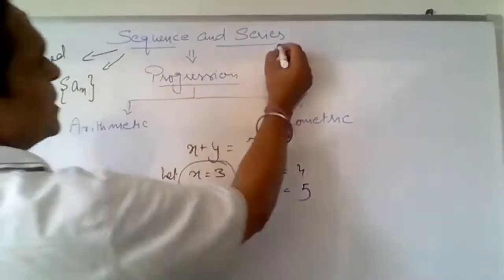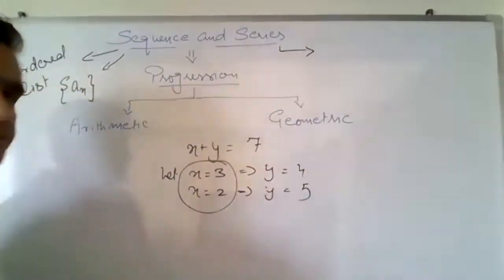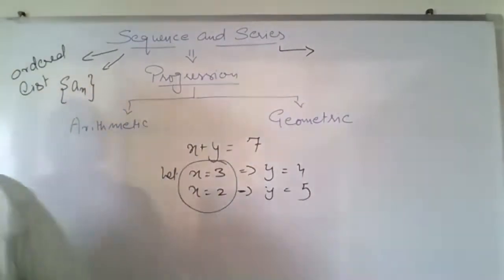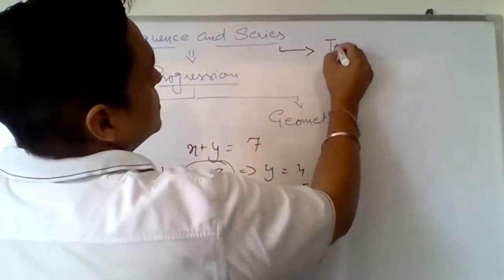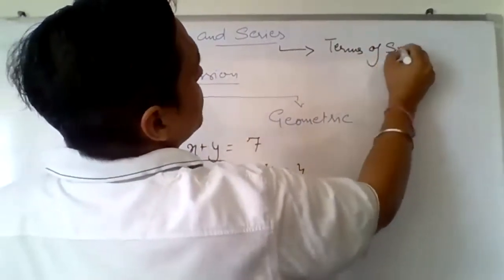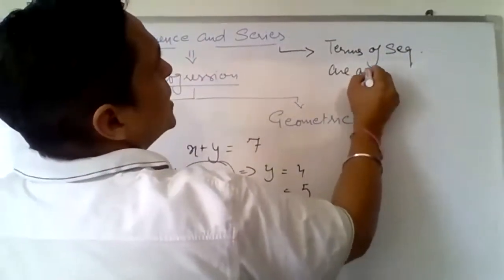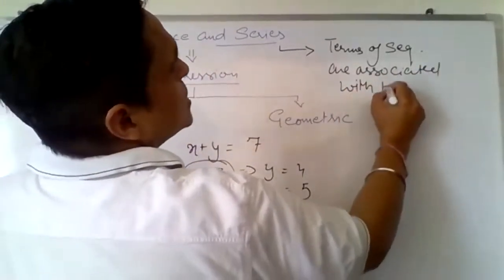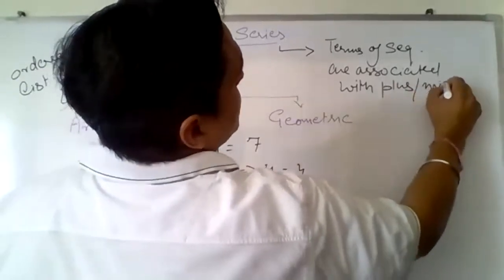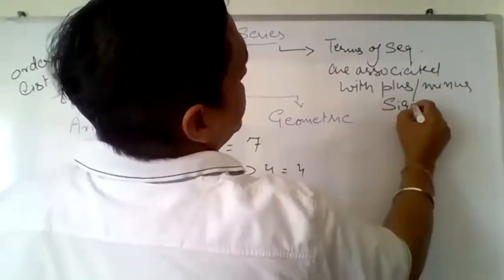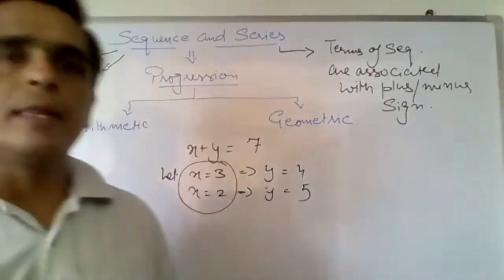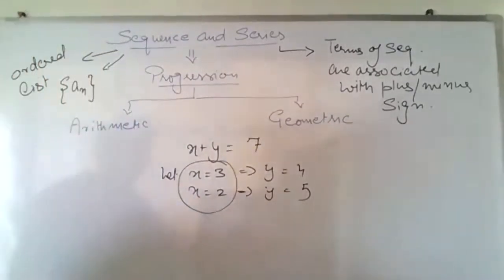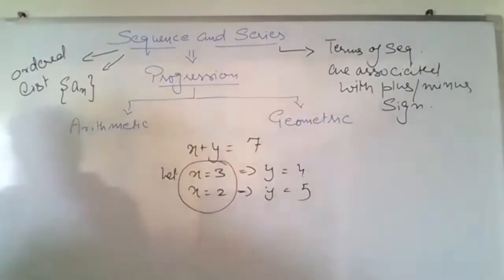Next, we have the definition of a series. If the terms of the sequence are associated with a plus or minus sign, then the resulting expression is called a series.